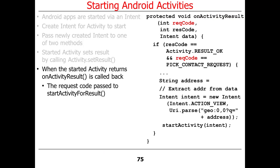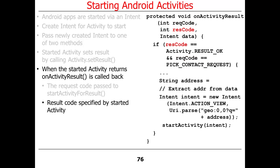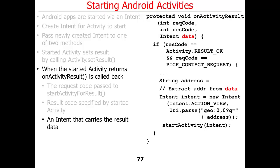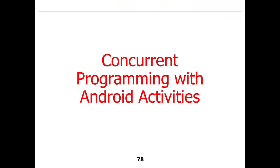To summarize: the request code is passed back so you can identify which request the response corresponds to. The result code indicates whether the operation succeeded or failed. The intent carries whatever data comes back — in this case, an indication of which contact was picked by the contacts application.